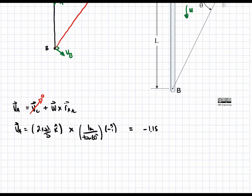We can do this cross product easily. And it yields the following result: negative 1.15 j hat meters per second. And this is going to be our value for VA. This is our final answer for velocity of A.